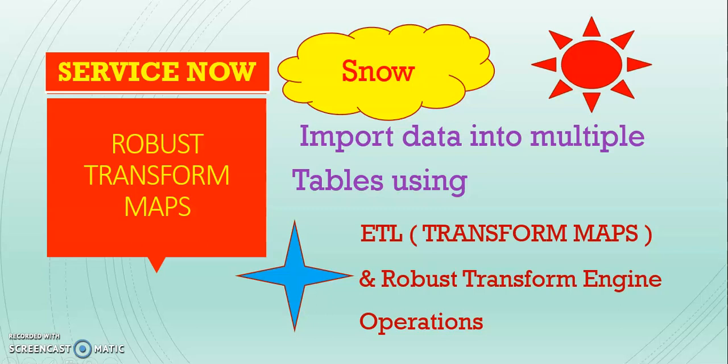Today I'm covering a new topic in ServiceNow: Robust Import Set Transform Maps. This is used when we're going to import a single set of data from an Excel file into multiple tables. Normally, transform maps update into a single target table. To insert into multiple tables we need multiple transform maps, but with the Robust Transform Engine this is made flexible.